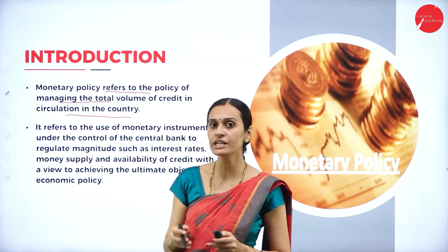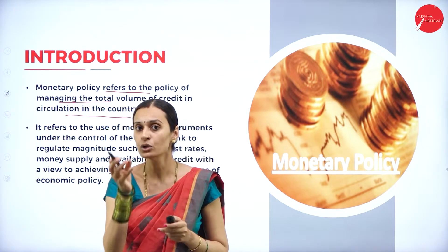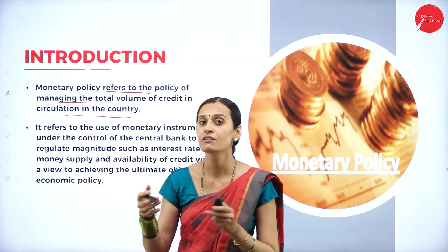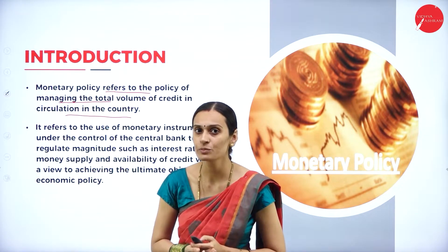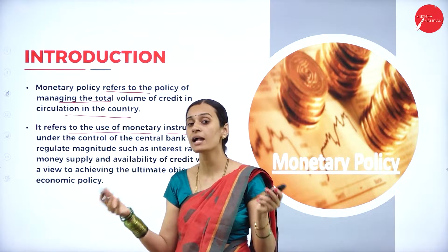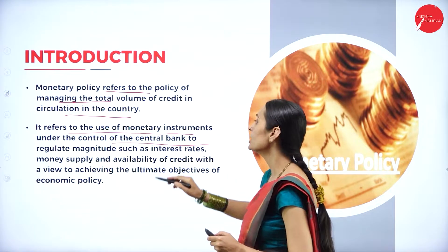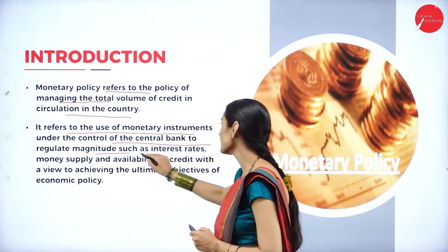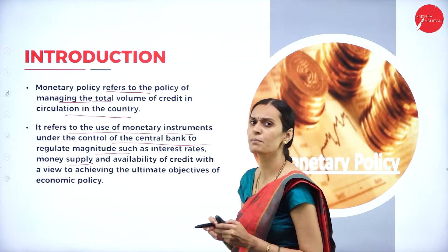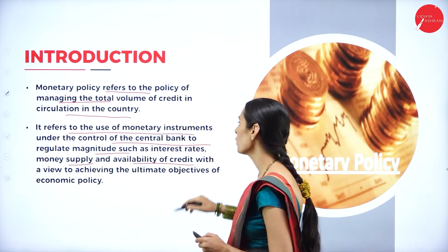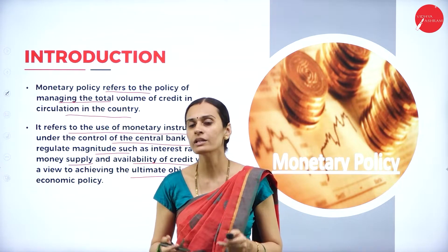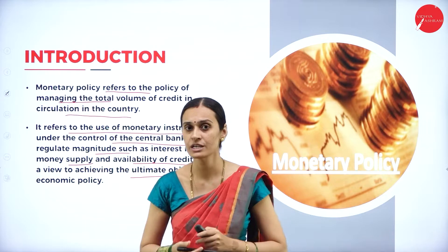Every commercial bank and financial institution provides credit facility to the public, and RBI controls the volume of credit by different instruments. It refers to the use of monetary instruments — qualitative and quantitative instruments — under the control of RBI to regulate the magnitude such as interest rate, money supply, and availability of credit, with a view to achieving the ultimate objectives of price stability and full employment conditions.